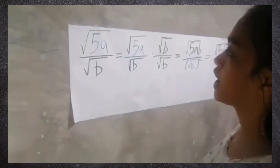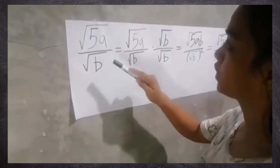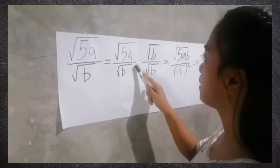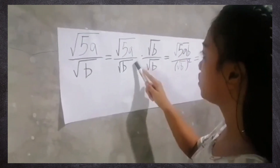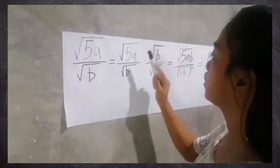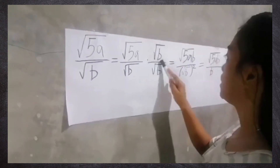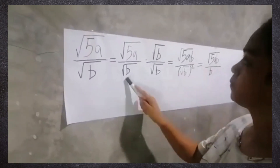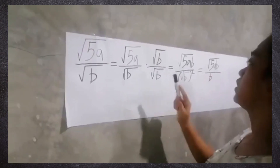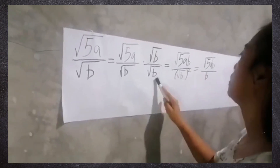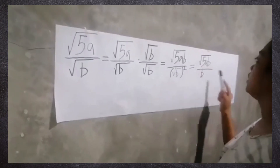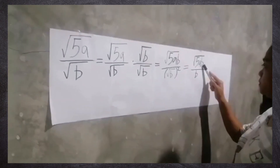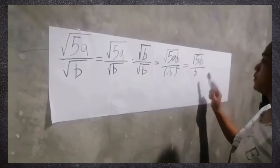We have square root of 5a over square root of b. Square root of 5a times square root of b equals square root of 5ab; square root of b times square root of b equals b. Therefore, the final answer is square root of 5ab over b.